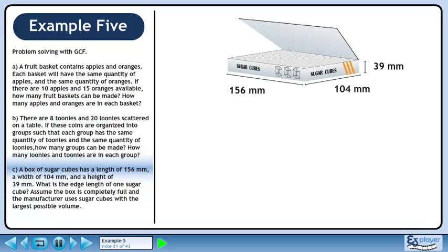Now we'll move on to part C. A box of sugar cubes has a length of 156 mm, a width of 104 mm, and a height of 39 mm. What is the edge length of one sugar cube? Assume the box is completely full and the manufacturer uses sugar cubes with the largest possible volume.